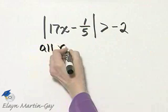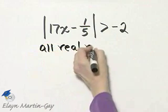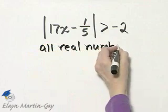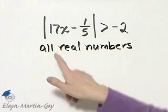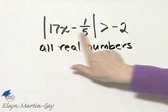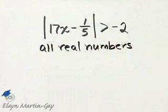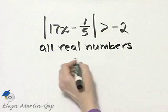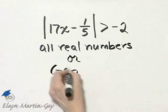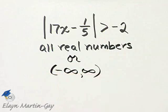is all real numbers. And I suggest that you try letting x be a few real numbers to ensure that you understand what's happening here. So I can write all real numbers, or I can write in interval notation from negative infinity to infinity.